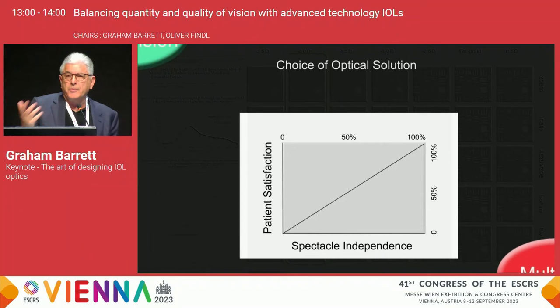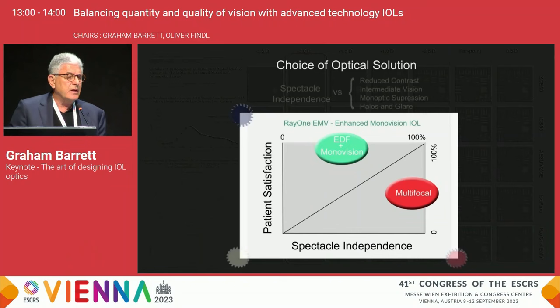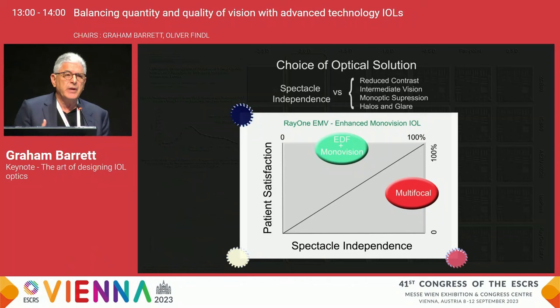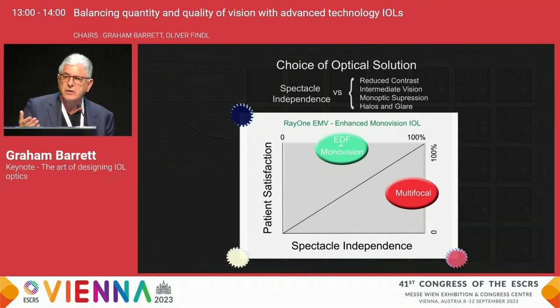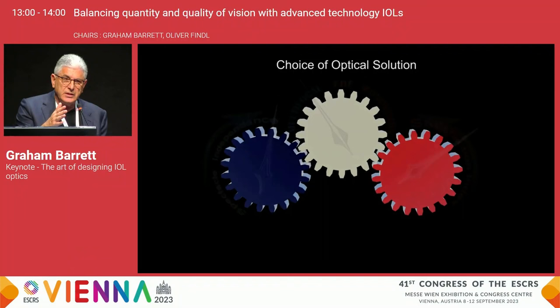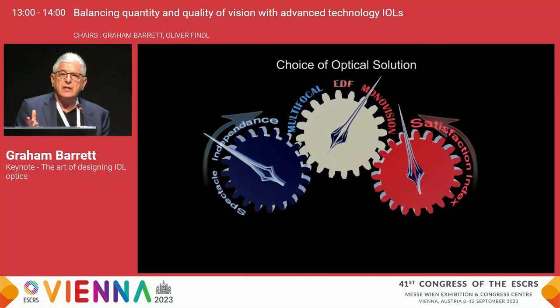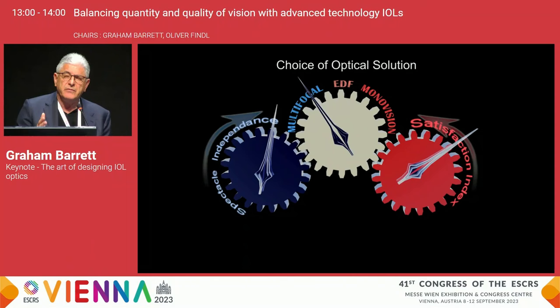When you choose an optic and optical solution, there is always a balance between quality of vision and spectacle independence. I would suggest that total spectacle independence is not perhaps the ideal parameter to judge patient satisfaction. You may have a patient who's totally spectacle independent with a multifocal but still not happy with the quality of vision. An extended depth of focus or monofocal plus lens such as the Rayner EMV, based on positive spherical aberration, gives you that best balance.